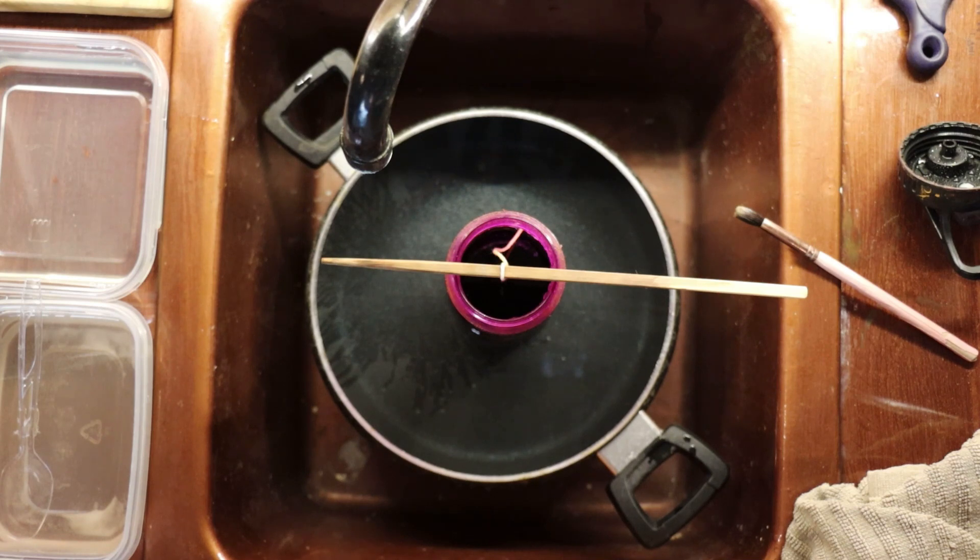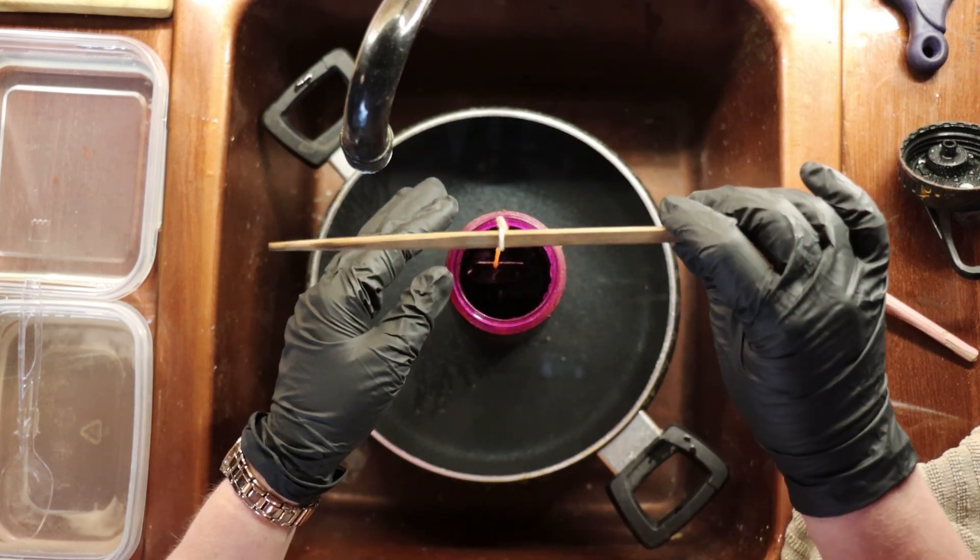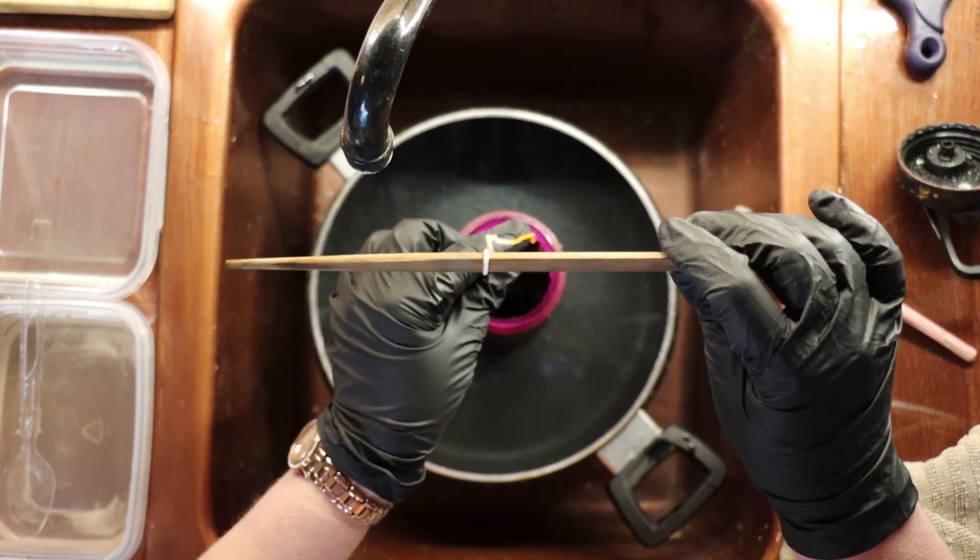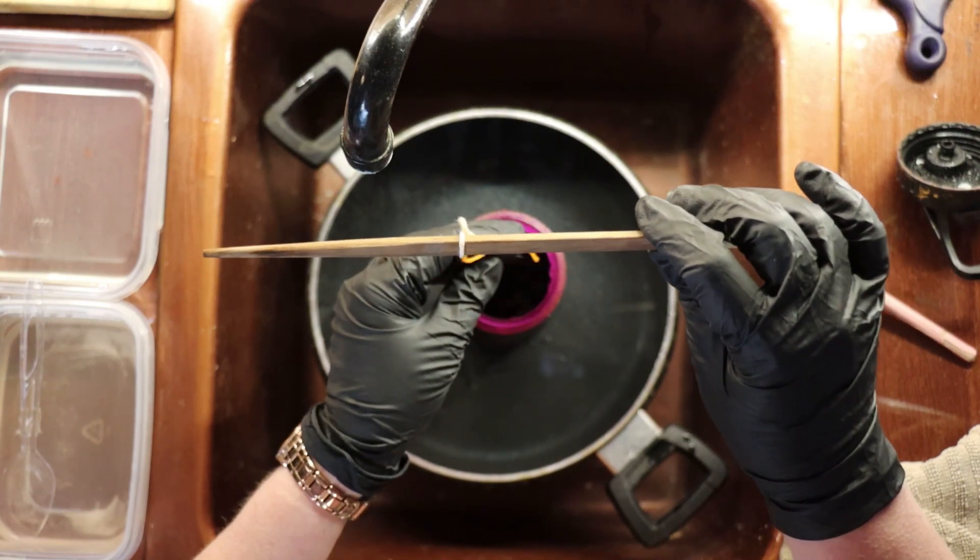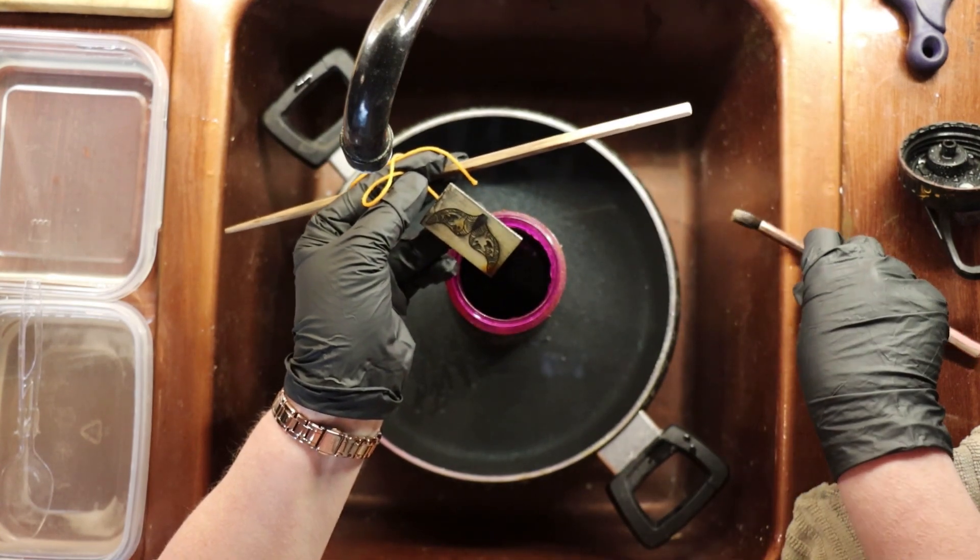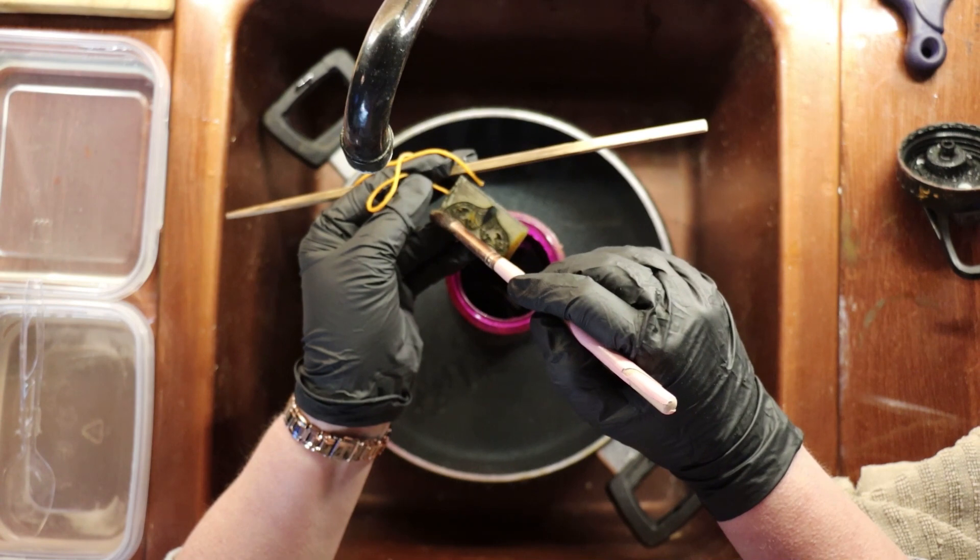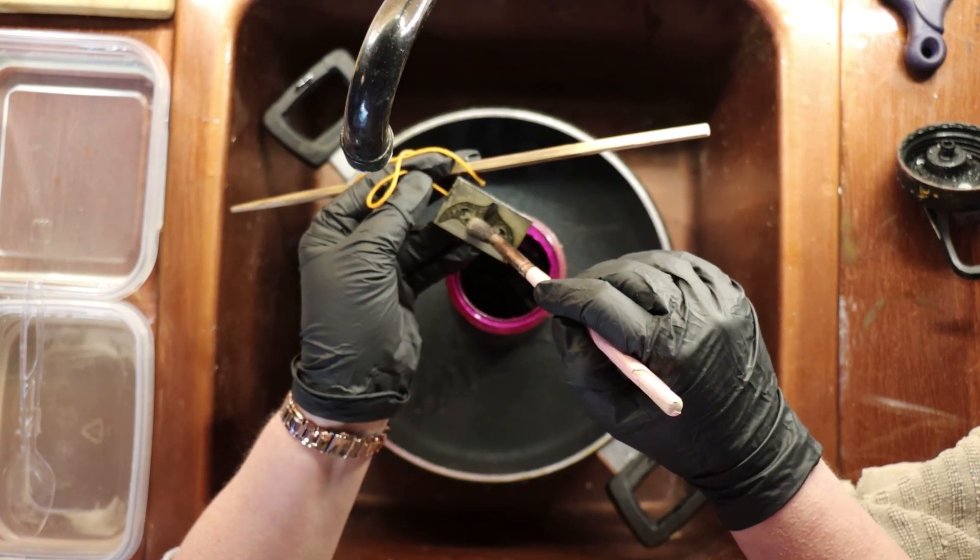So we are now 40 minutes into the etching, and I only etch my pieces for an hour, so we're going to check the piece again. This is when you will start to notice a considerable difference. So using our soft brush, we're going to remove the etchant again.